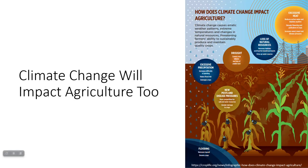Climate change is also going to impact agriculture. Any of the changes that happen — like excessive heat from hotter summers, which Europe has especially been experiencing — can decrease surface water. Then drought causes crop failure. In areas with excessive precipitation and flooding, that can damage crops as well and remove topsoil. And then new pests can move into an area because they're now able to survive in the changing climate.